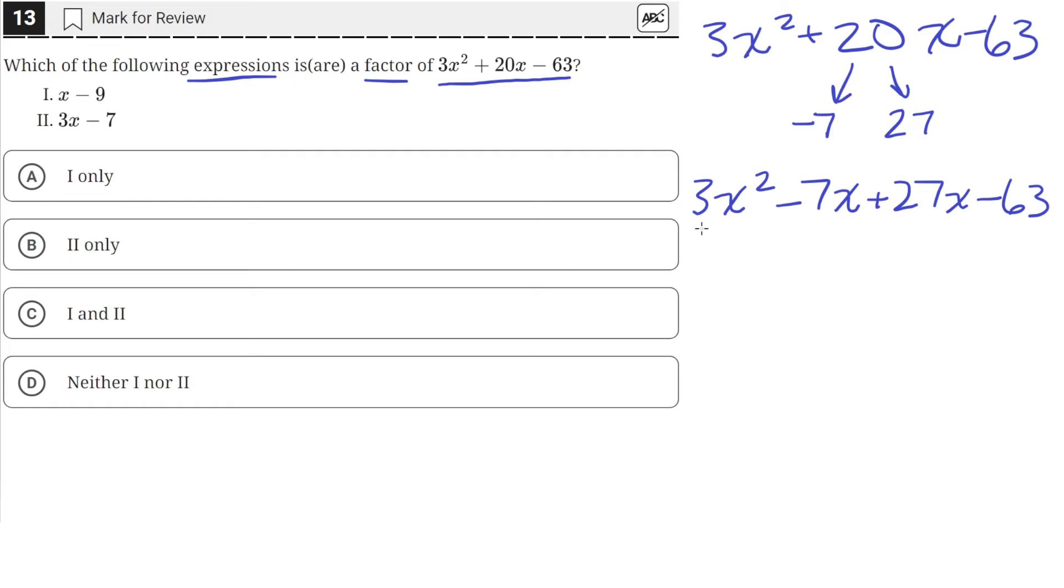Then we can just factor out some terms. So from these first two terms, we can factor out an x. So we'll be left with 3x minus 7. So we just factored out an x from both of these terms.